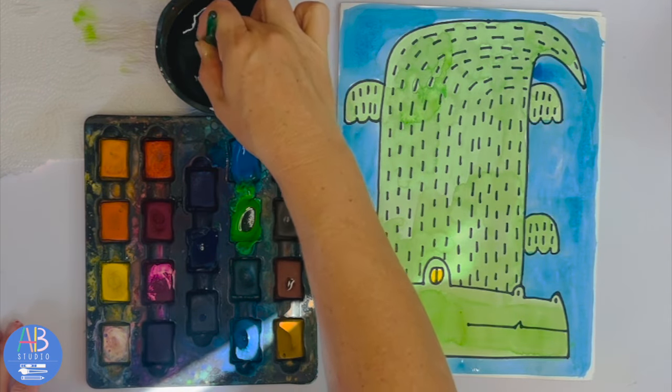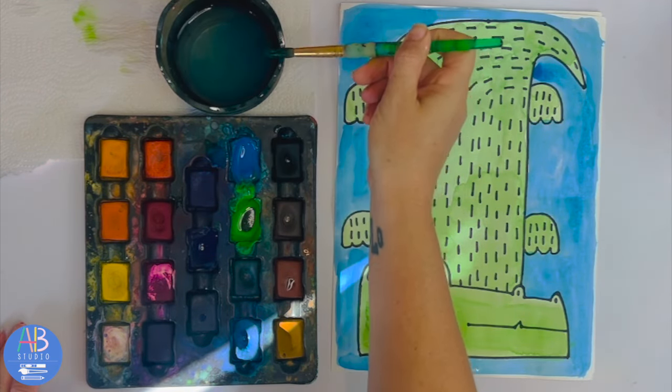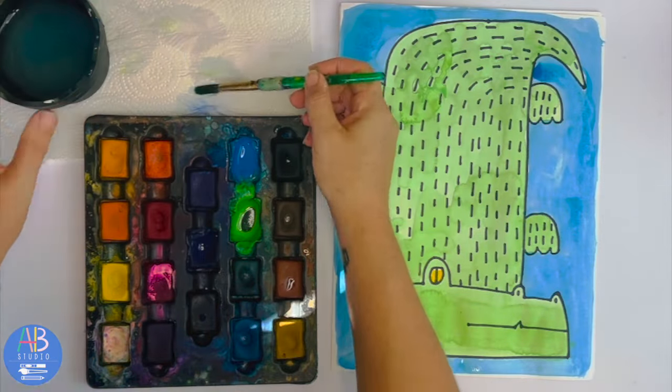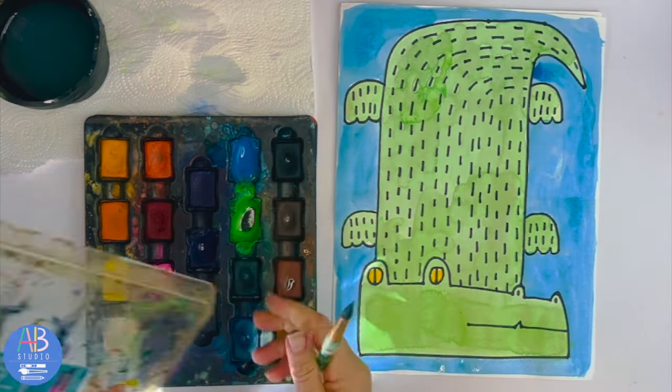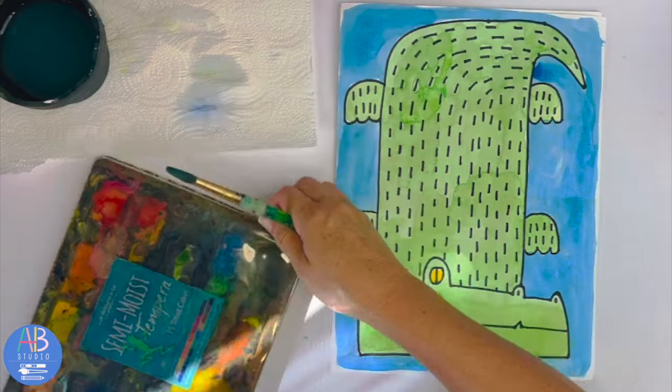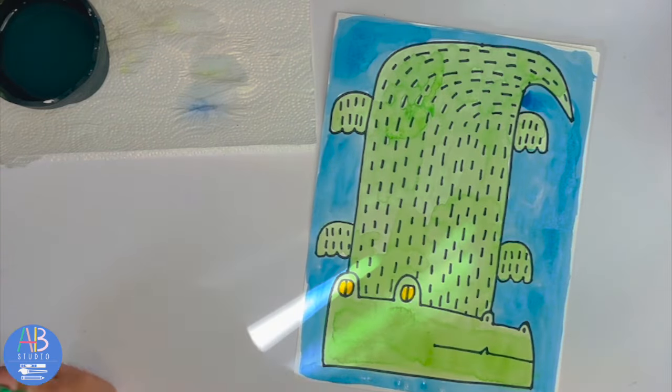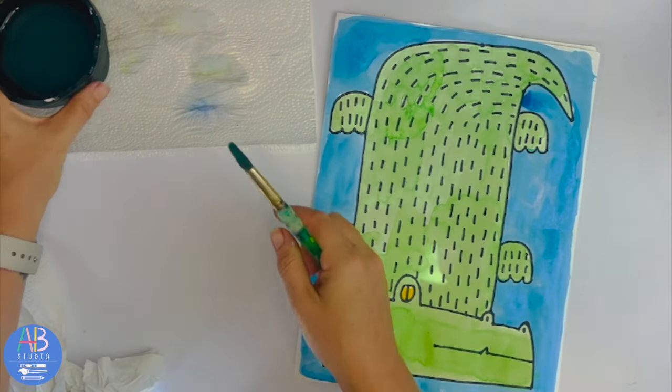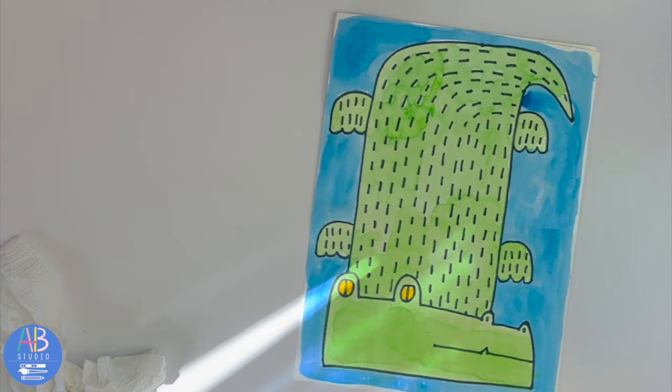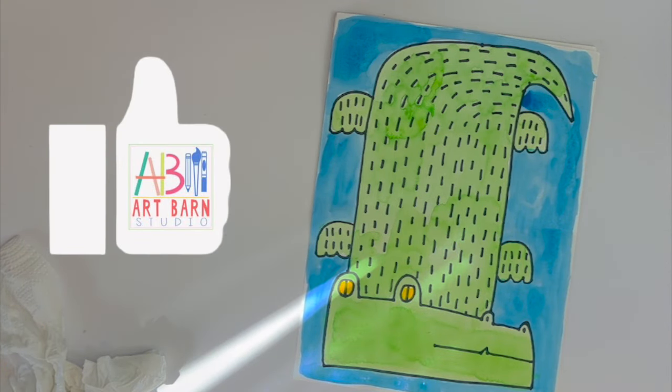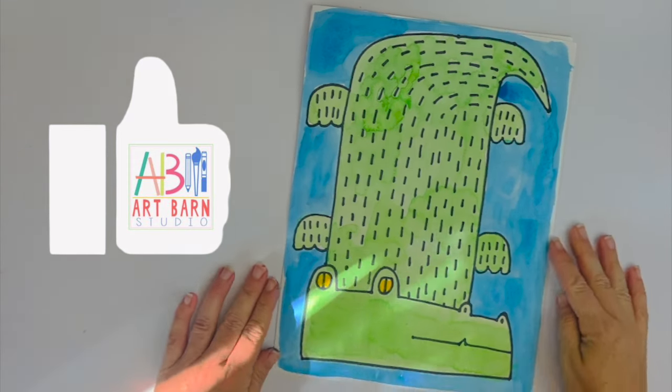Then I'm gonna make sure that I put my paints away correctly, I put my water away and my paintbrush away correctly. So make sure that you are cleaning up your area. This paper has to dry again, so wherever you put your papers to dry - and then we have our completed alligator.